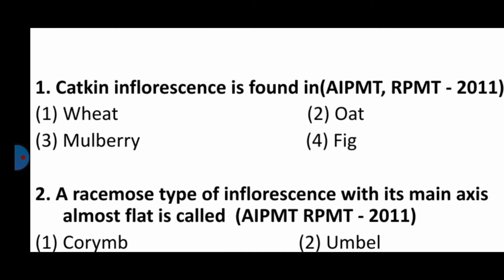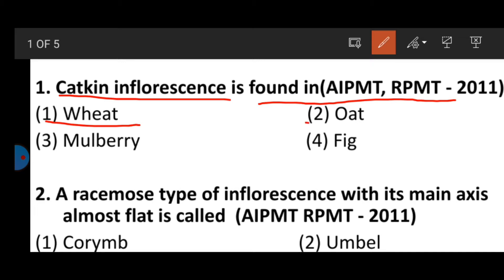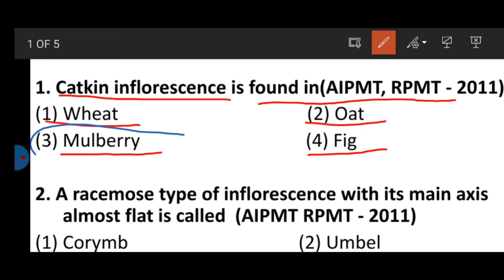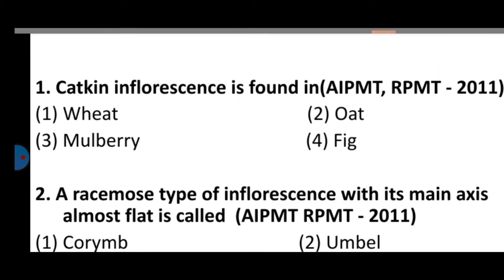Question number one: Catkin inflorescence is found in — option one: wheat, option two: fig, option three: mulberry, option four: fish. The correct answer is mulberry, where catkin type of inflorescence can be found.